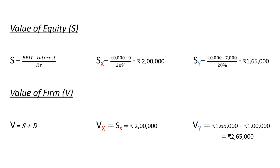The value of a firm equals the value of equity plus the value of debt. Firm X, having zero debt, has a firm value equal to its equity at rupees 2 lakhs, while firm Y, having a debt component, has a firm value of rupees 2 lakh 65,000. The value of the levered firm is higher than the unlevered firm. The MM approach argues that this difference is due to capital structure, but through the arbitrage process the levered firm's value will come down and the unlevered firm's value will go up.